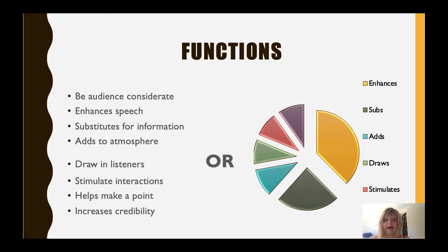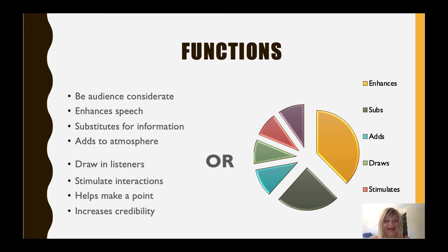Now on this slide, I have a bullet point list on the left and a pie chart on the right, each one detailing the functions of presentation aids. Both of these organizational tools show the functions, but which one do you prefer — the list or the pie chart? Is it because it's colorful and helps showcase value for each one of the functions? In either case, it would be important to consider the preferences and even the learning styles of your audience when deciding how to design your slide or which presentation enhancer to use.